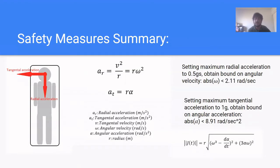So here's a summary of our safety measures. We have an upper bound on angular velocity to be 2.11 radians per second. We have an upper bound on angular acceleration to be 8.91 radians per second. And we have a jerk formula used to evaluate comfort.